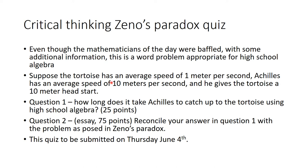Suppose that the tortoise has an average speed of 1 meter per second and Achilles has an average speed of 10 meters per second, and he gives the tortoise a 10-meter head start. Question one: How long does it take Achilles to catch up to the tortoise using high school algebra? Question two, which is an essay and somewhat more involved and worth more points: Reconcile your answer in question one with the problem as posed in Zeno's paradox. Because you see, in Zeno's paradox he never caught up, and certainly you don't have the number that's here. So reconciling includes reconciling not only that he caught up but also the number. This quiz is to be submitted on Thursday, June 4th.